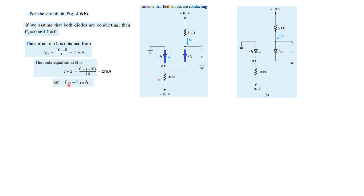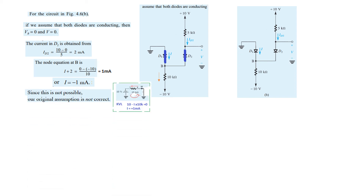This is not possible. Why? If we redraw this diagram — minus 10V, a resistance, and ground — current from the positive terminal would make this point positive and this negative. Writing the equation: −I × 10K = 0, therefore I = +5. But we are getting I = −1, so this is not possible. We conclude that our assumption is not correct.